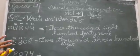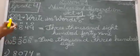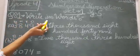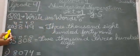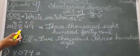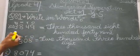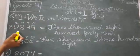So, the first question is: write in words. The number is 3, 8, 4, 9. It is a 4-digit number.